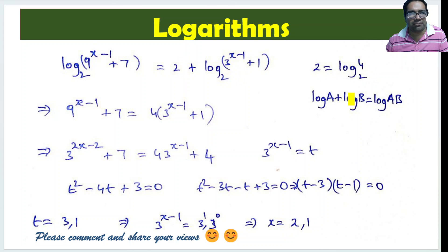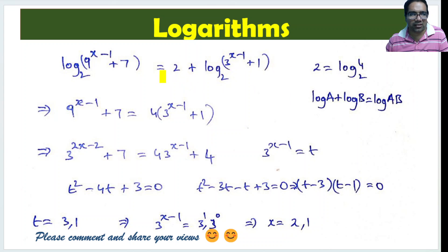Now, what is log a plus log b? It is log(ab). So log₂(4) plus log₂(3^(x-1) + 1) means the right-hand side becomes log₂ of 4 times (3^(x-1) + 1).